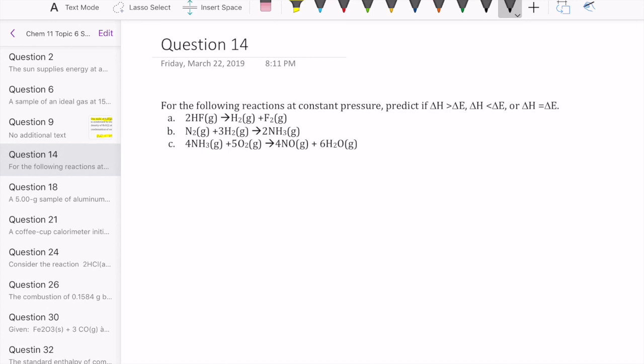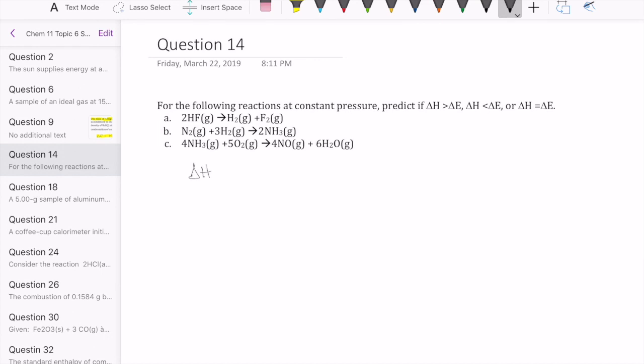In order to do that, you have to remember the definition of delta H. Remember that delta H is just heat that's measured under constant pressure, which we give the symbol Q sub P.